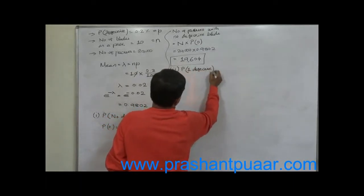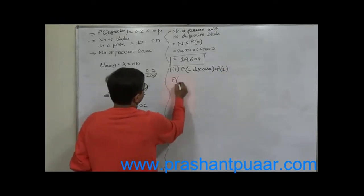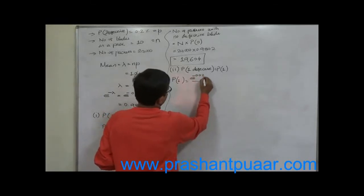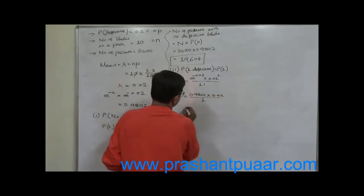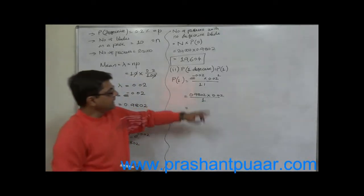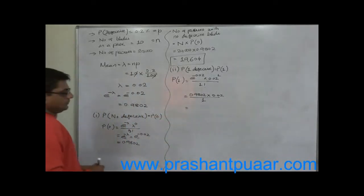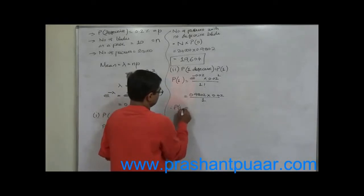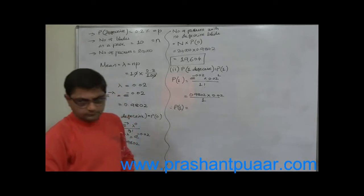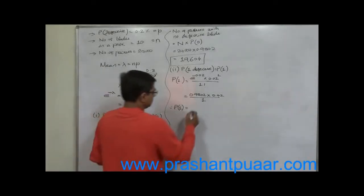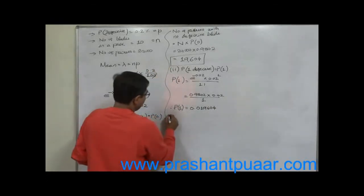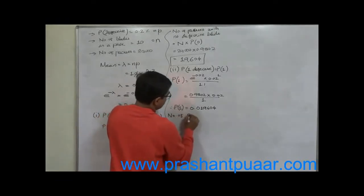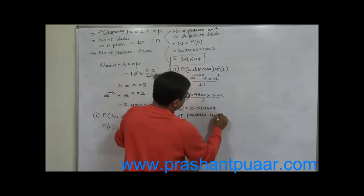Now, probability of one defective blade: P(1) equals e raised to minus mean, multiplied by mean raised to 1 divided by 1 factorial. That means 0.9802 × 0.02 divided by 1, which gives 0.9802 × 0.02 = 0.019604.